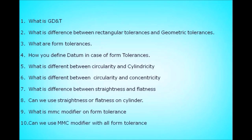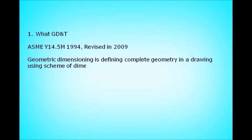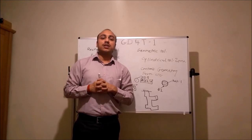We will discuss these questions one by one. What is GD&T? As per ASME Y14.5 M1994, revised in 2009, geometric dimensioning is defining complete geometry in a drawing using a scheme of dimensions. Geometric tolerancing is controlling form, orientation, location, profile, or a combination of these.